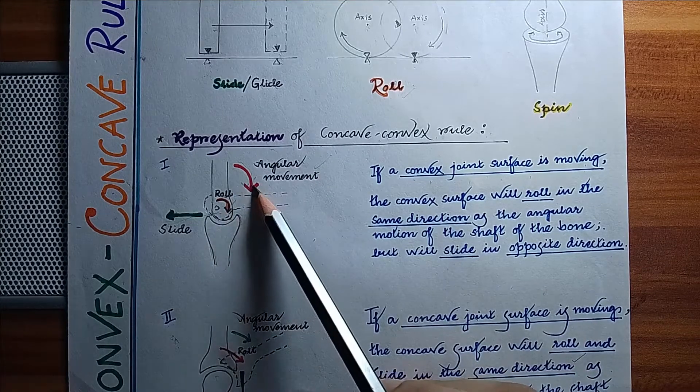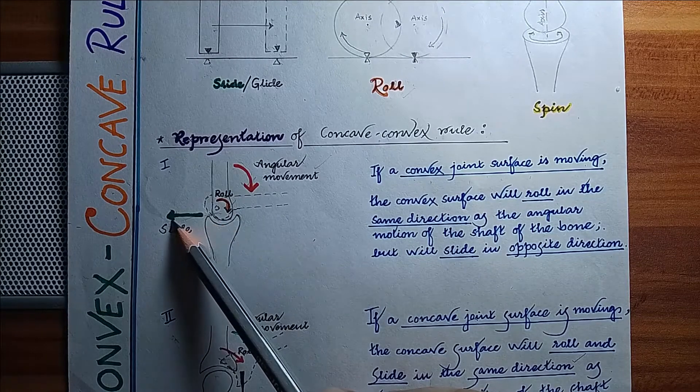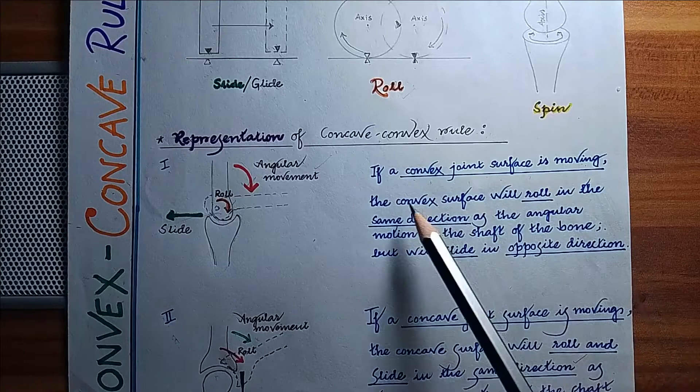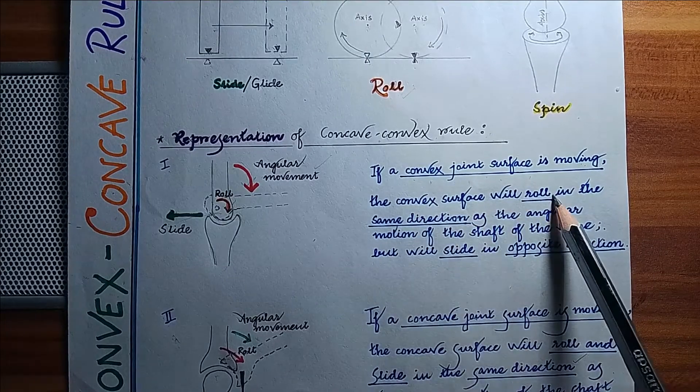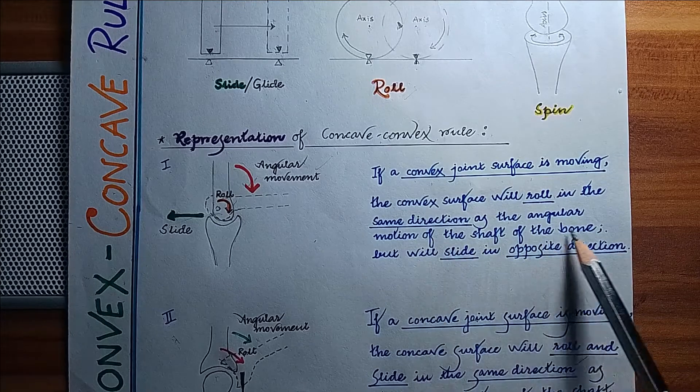If a convex joint surface is moving, the convex surface will roll in the same direction as the angular motion of the shaft of the bone, but will slide in the opposite direction.